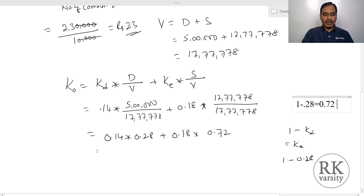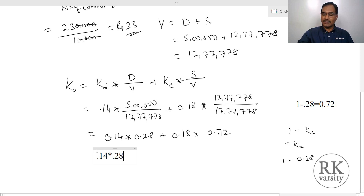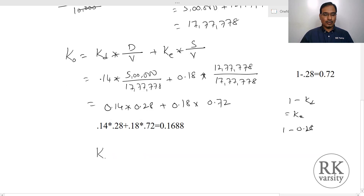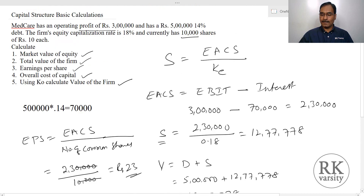So your overall cost of capital is 0.14 times 0.28 plus 0.18 times 0.72, which gives 16.88%. That is your overall cost of capital KO equals 0.1688 or 16.88%.